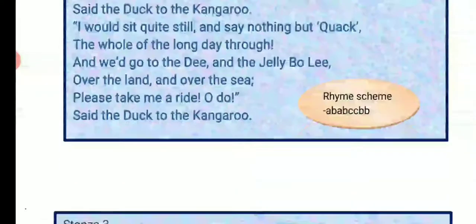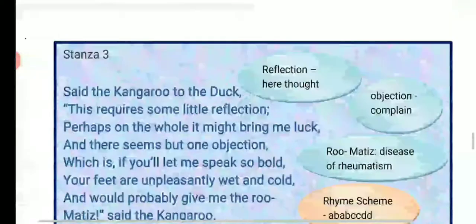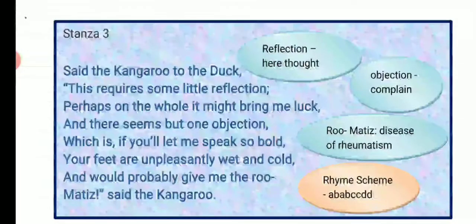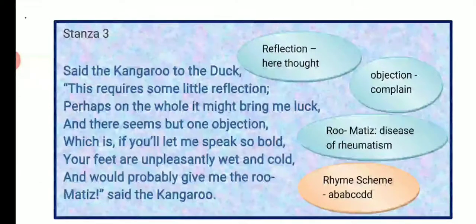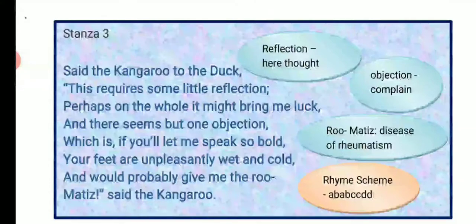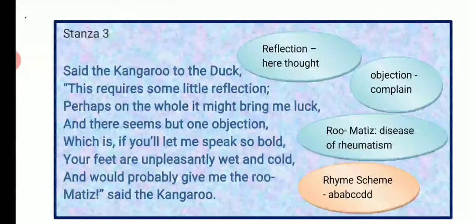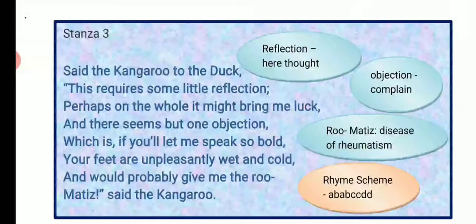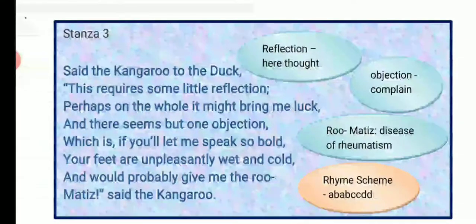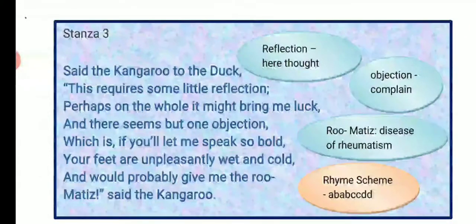Coming to stanza 3: 'Said the kangaroo to the duck, this requires some little reflection. Perhaps on the whole it might bring me luck, and there seems but one objection. Which is, if you'll let me speak so bold, your feet are unpleasant, wet and cold, and would probably give me the rheumatism,' said the kangaroo. When the duck requested the kangaroo to give it a ride, the kangaroo replied that it had to think over it — 'reflection' meaning thought.